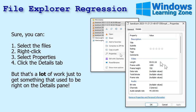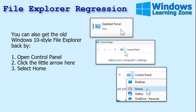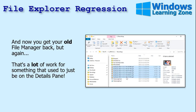You can get back to the Windows 10 style of File Explorer by opening the Control Panel, clicking the little down arrow, picking Home, and then browsing to your folder. But again, that's a lot of work — you have to go in through the Control Panel. It's the only way. There's no registry key, there's no setting. It's weird.